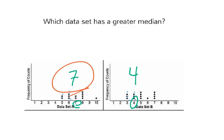So data set A has a greater mean. Median. Data set A has a greater median because 7 is greater than 4.